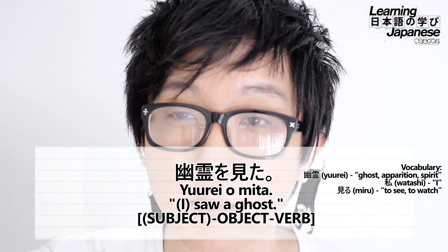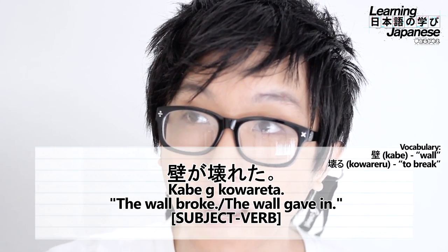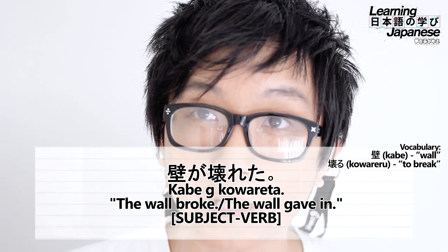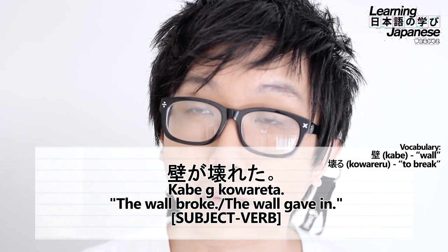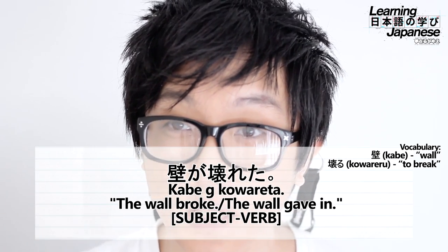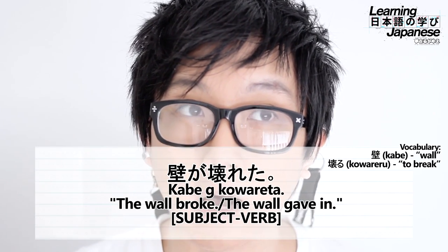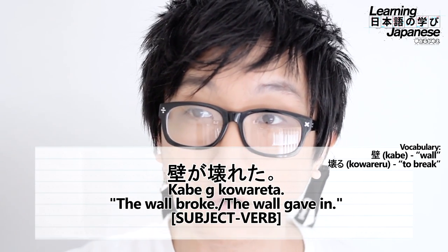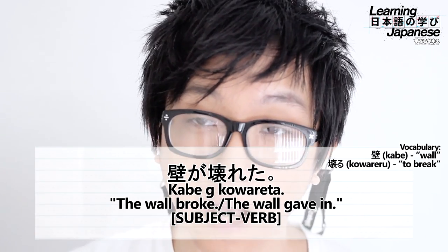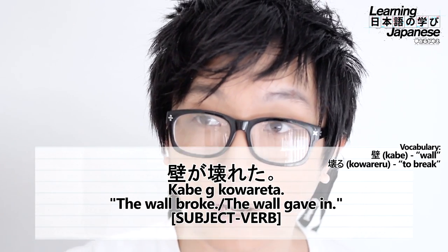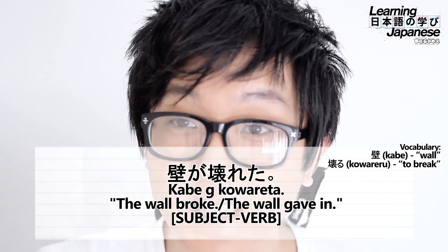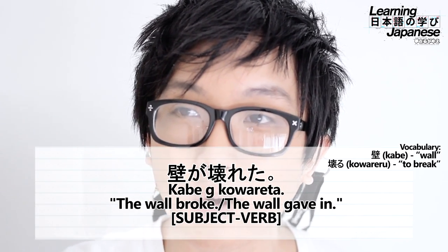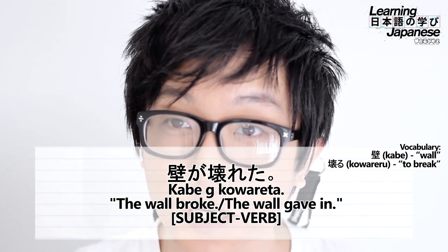Our next example sentence: 'The wall broke.' 'Wall' in Japanese is 'kabe,' and the verb 'to break' is 'kowareru.' Since there's no direct object, we just have subject then verb. We mark 'kabe' with the subject marker particle 'ga' — 'kabe ga' — then the verb. The past tense of 'kowareru' is 'kowareta,' so 'kabe ga kowareta' means 'the wall broke.' Pretty simple.